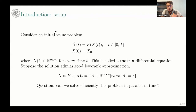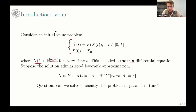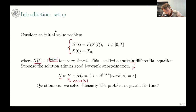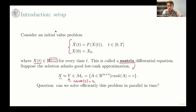We consider the initial value problem here, where the variable x is a matrix of size n by n. This is called a matrix differential equation. Since it's a matrix, we can talk about the rank of the matrix. We suppose that the solution x can be approximated by a matrix y such that the rank of y is equal to r — so y is in the manifold of rank-r matrices. The question is: can we solve this problem efficiently in parallel in time?